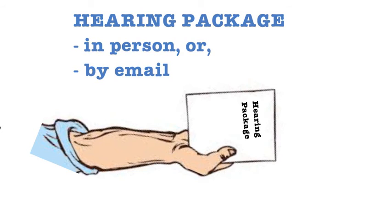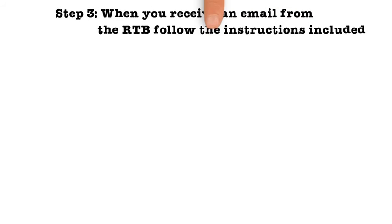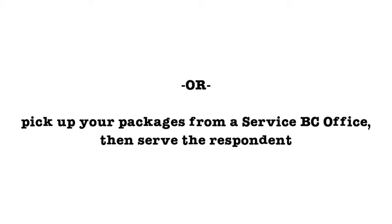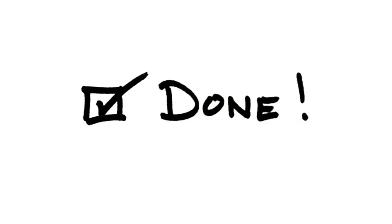Step 3: when you receive an email from the Residential Tenancy Branch, follow the instructions included. Print the application, assemble the packages, and serve the respondent. Or, pick up your packages from the Service BC office nearest you and serve the respondent. That's it!